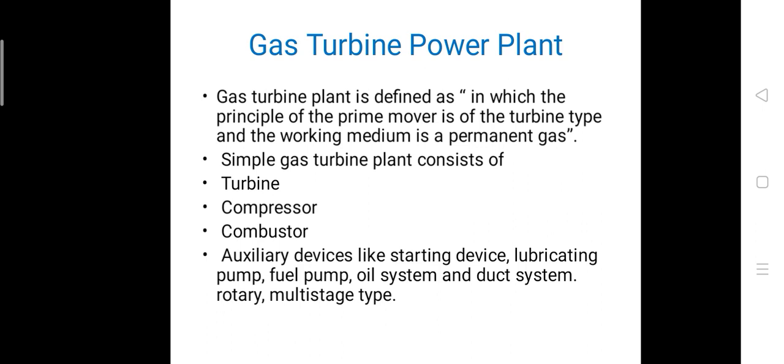The gas turbine power plant is defined as one in which the principle of the prime mover is of the turbine type and the working medium is a permanent gas. The simple gas turbine plant consists of a turbine, compressor, and combustion chamber, along with auxiliary devices like a starting device, lubricating pump, fuel pump, oil system, and duct system.